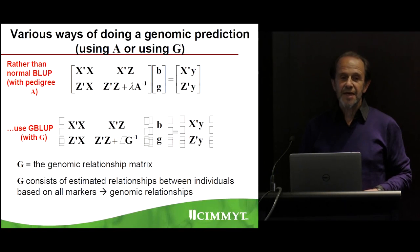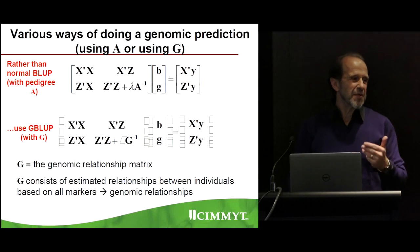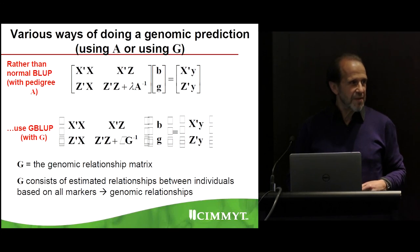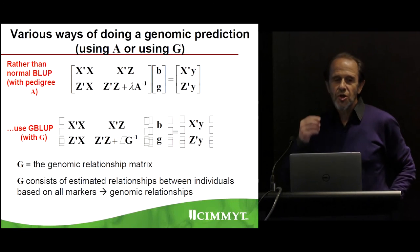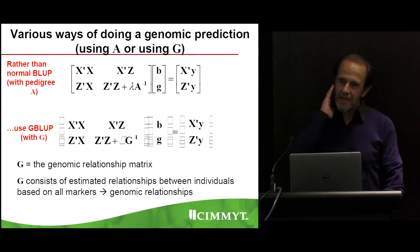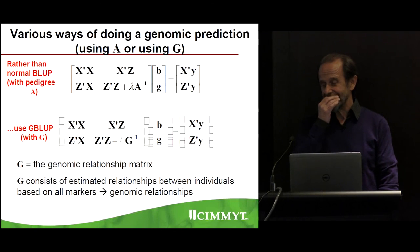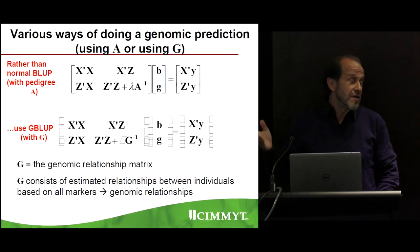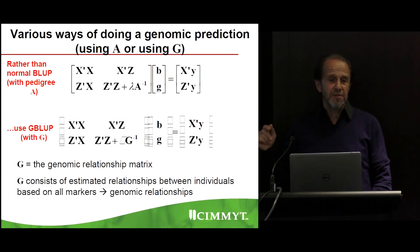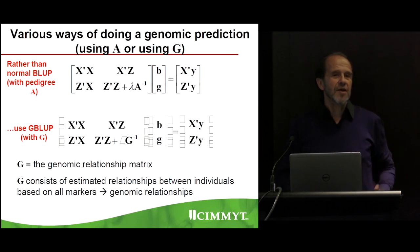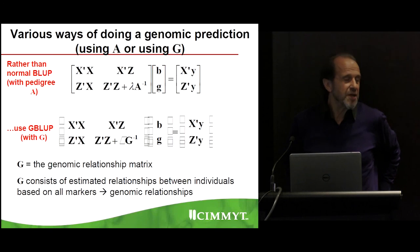Next I will present statistical methods and some of the complexities for estimating the breeding values when we use a large number of markers. The main complication is that you have more markers than individuals most of the time, because markers are cheap. You might have 20,000 markers but fewer than 20,000 individuals. Statistically, you cannot use standard ordinary least squares to estimate the breeding value in this situation.